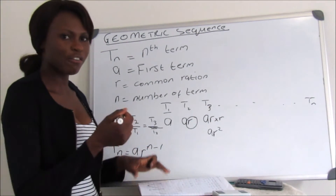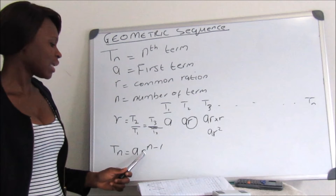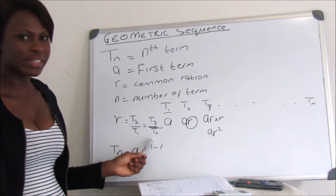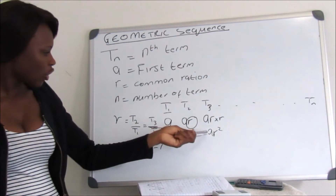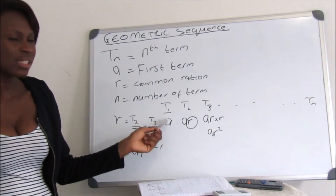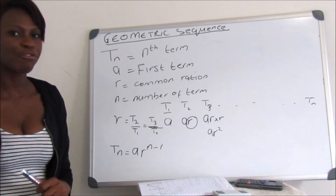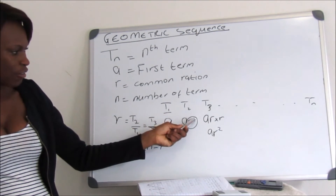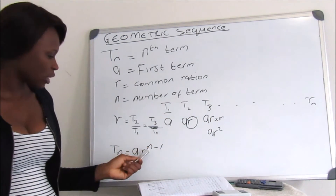From there we can derive that Tn equals A multiplied by R to the exponent of n minus 1. The first term is always A with no R. In the second term, R has an exponent of 1, because it is 2 minus 1. For T3, it is 3 minus 1, giving an exponent of 2.